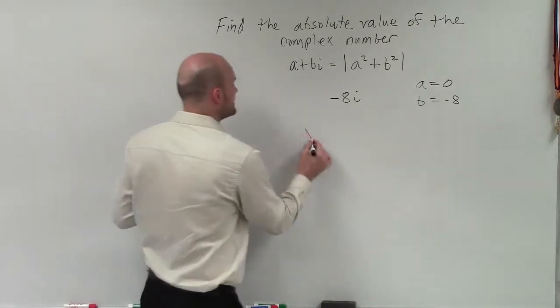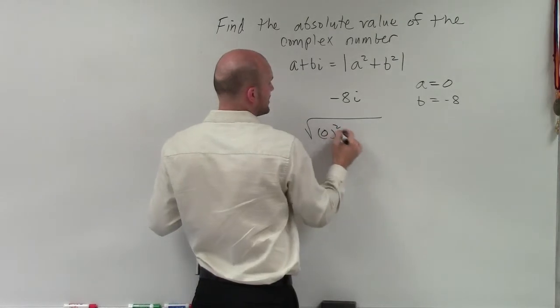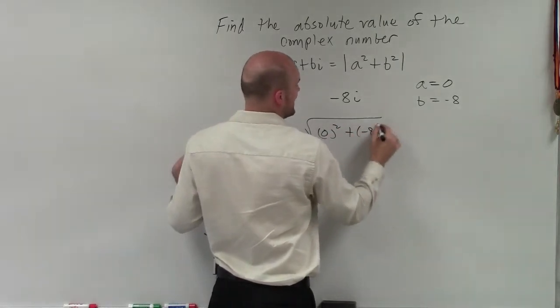Therefore, to find the absolute value, I have a squared, which is 0 squared, plus negative 8 squared.